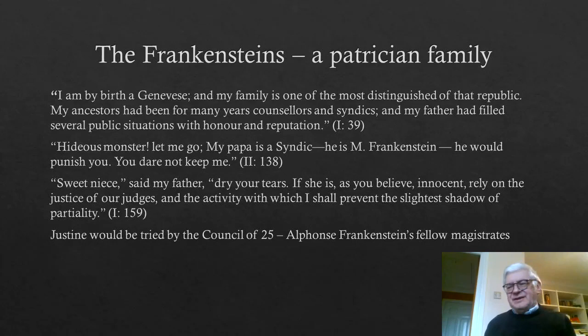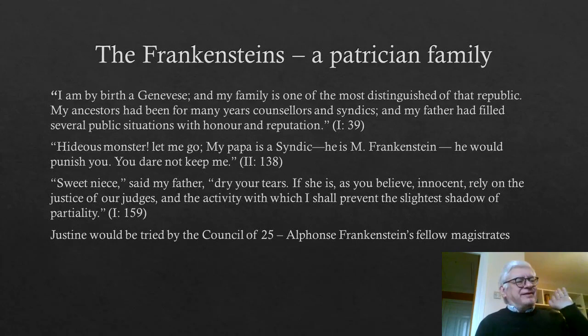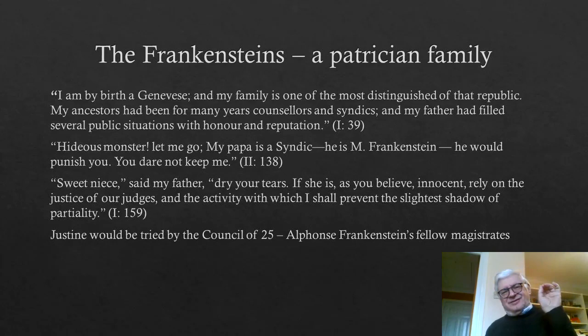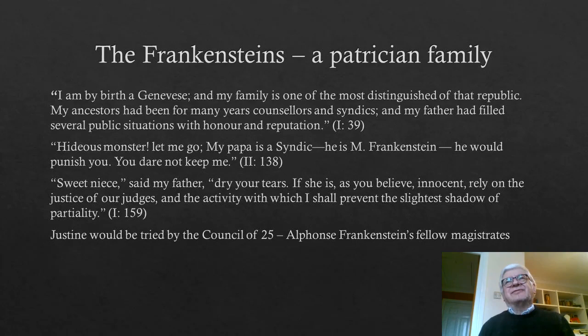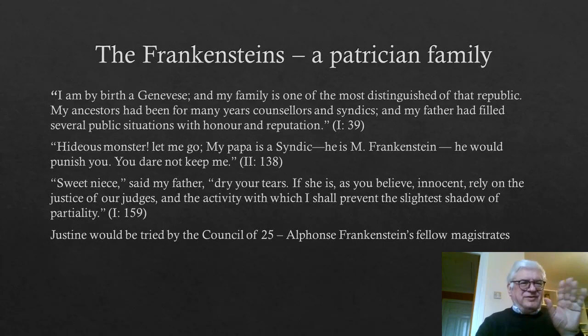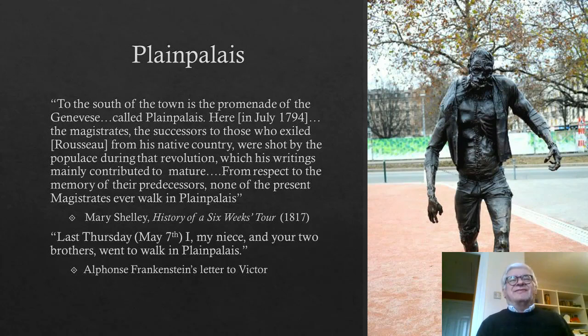Alphonse tells Elizabeth: 'Dry your tears — if she is, as you believe, innocent, rely on the justice of our judges and the activity with which I should prevent the slightest shadow of partiality.' He's clearly thinking here of his fellow magistrates, not a trial by jury. Strangely, some commentators on the novel think Justine gets a jury trial — but juries were in fact introduced into Geneva by the revolutionary regime. It seems to me that Mary Shelley is giving a reasonably accurate account of a trial by the Council of 25 — the council of magistrates who largely ran Geneva and handled serious criminal cases.